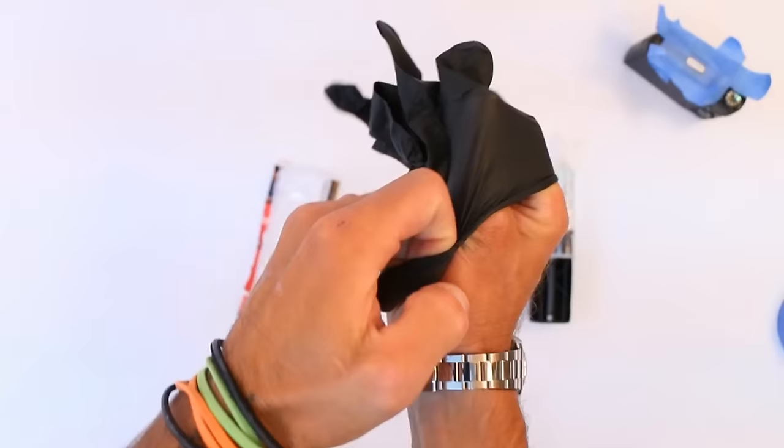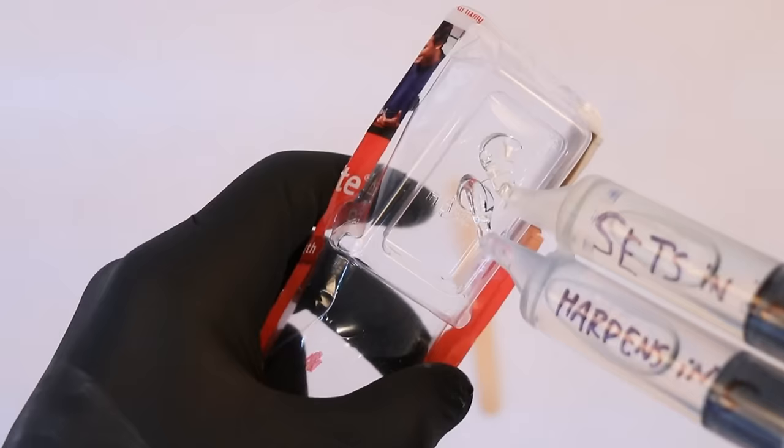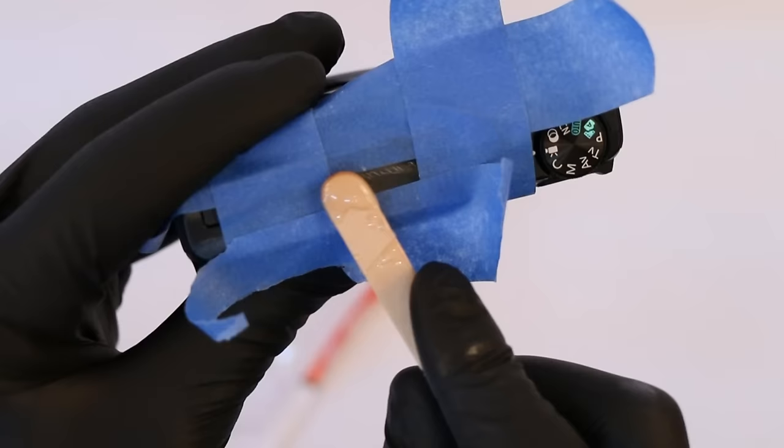Working with epoxy resin is a delicate process. If not handled correctly, this shit will wreck your entire life. Combine equal parts resin and hardener. You don't need much. Mix thoroughly, but quickly.